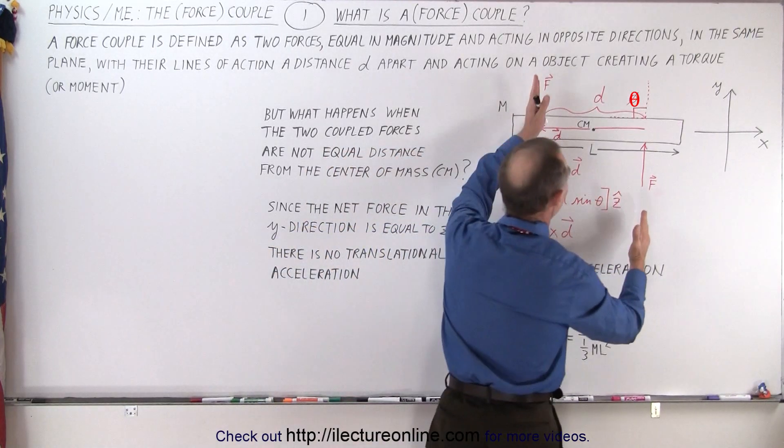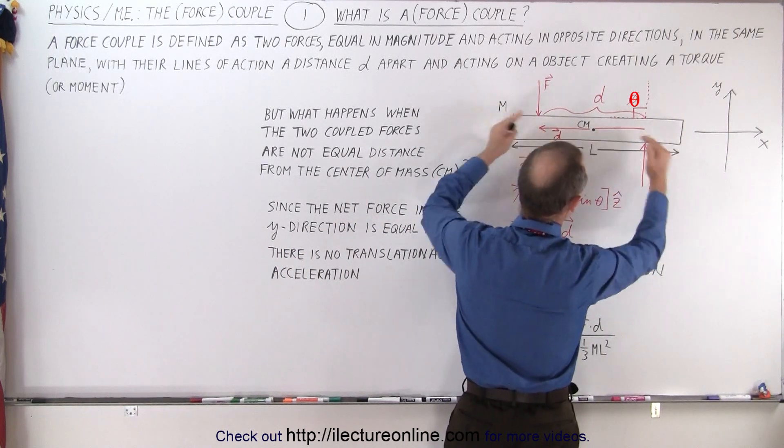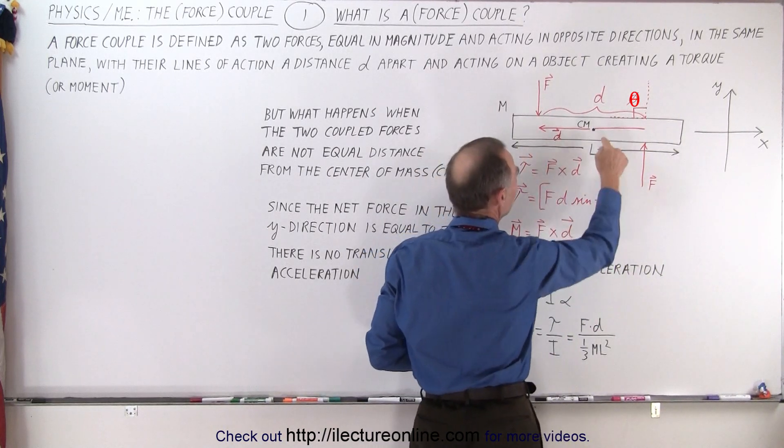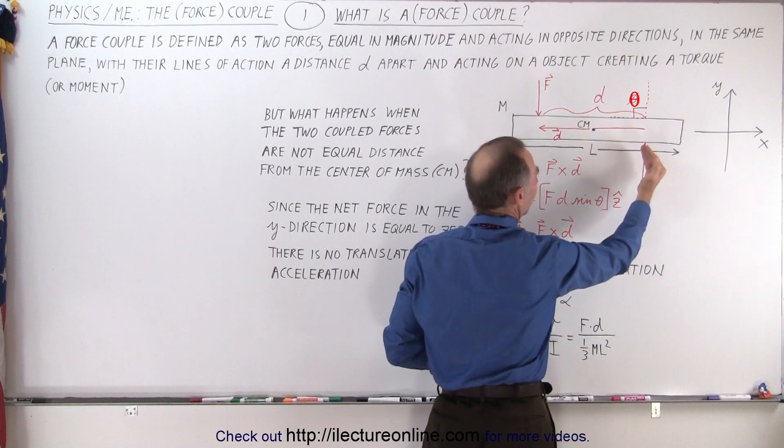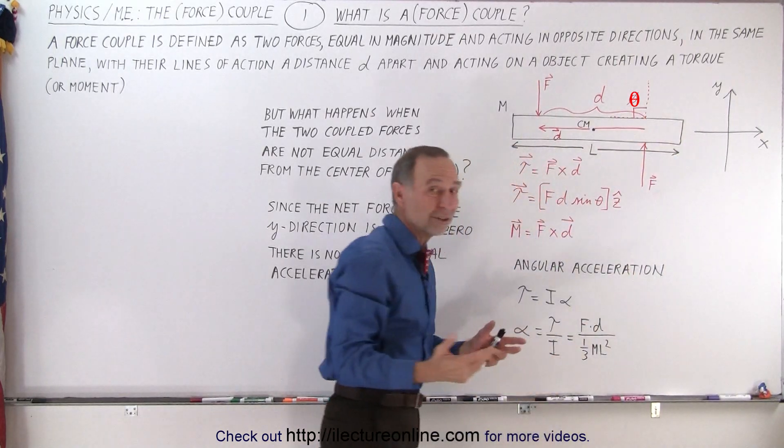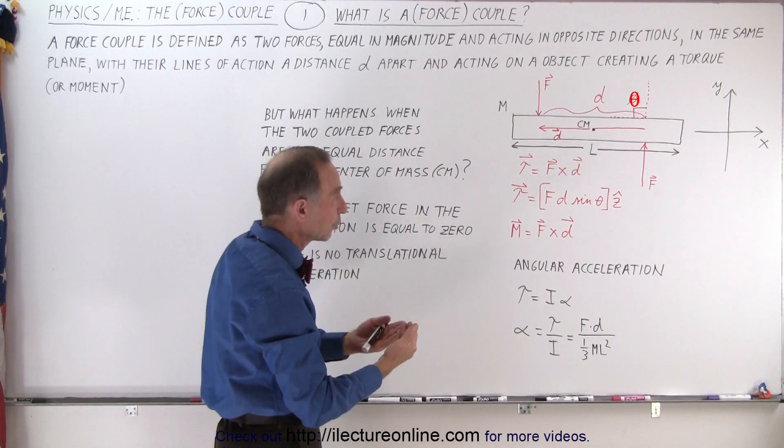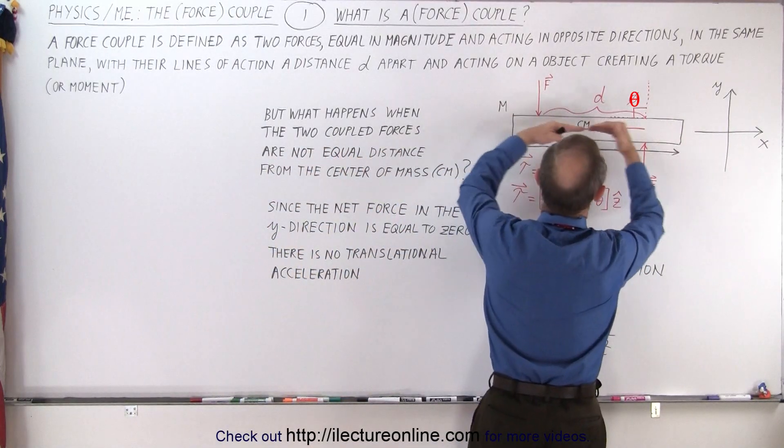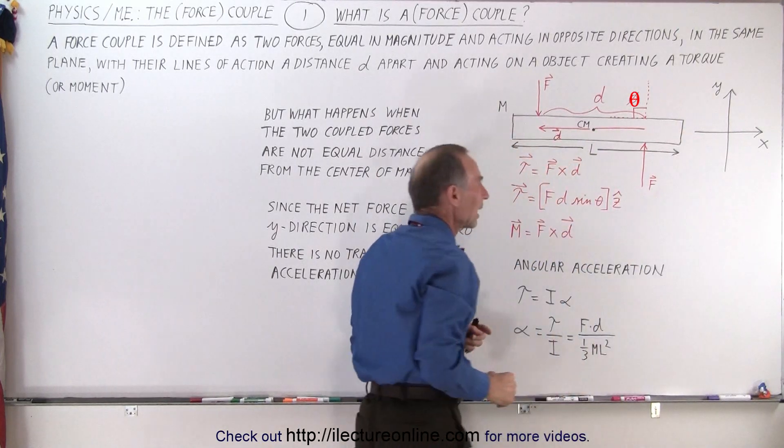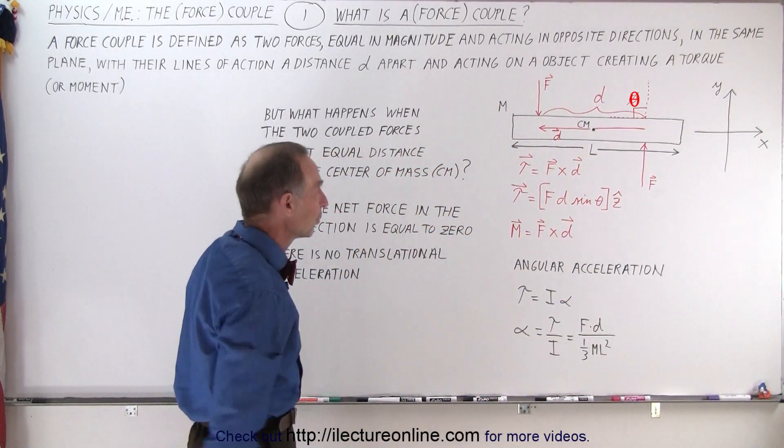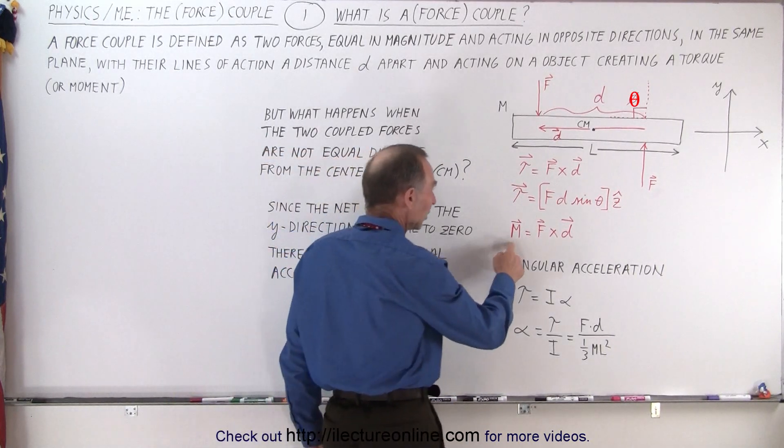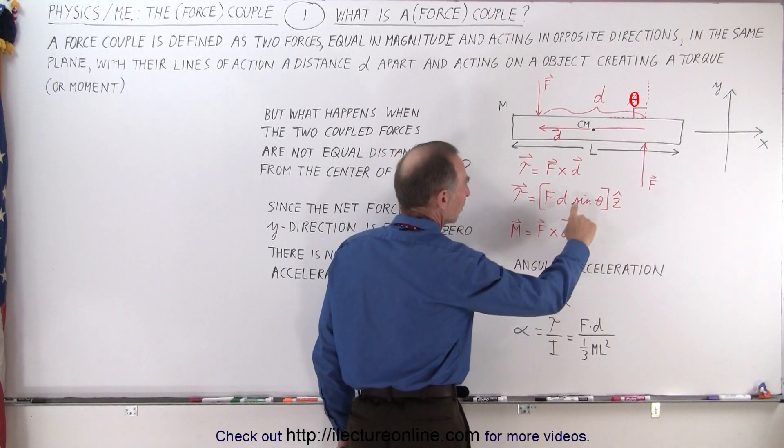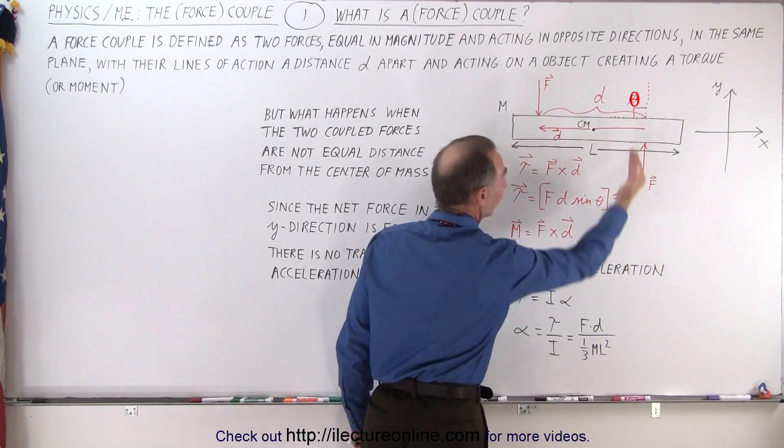Now if they are not perpendicular to the bar, if they act at an angle, then of course we have to multiply times the sine of the angle between the displacement vector and the force vector. And of course if the angle is zero degrees, if the force and displacement vector are parallel to one another, then the angle between them is zero, the sine of zero is zero, and no torque is created. You can see that if the forces act like this or like this, no torque can be created and therefore there's no rotational motion.